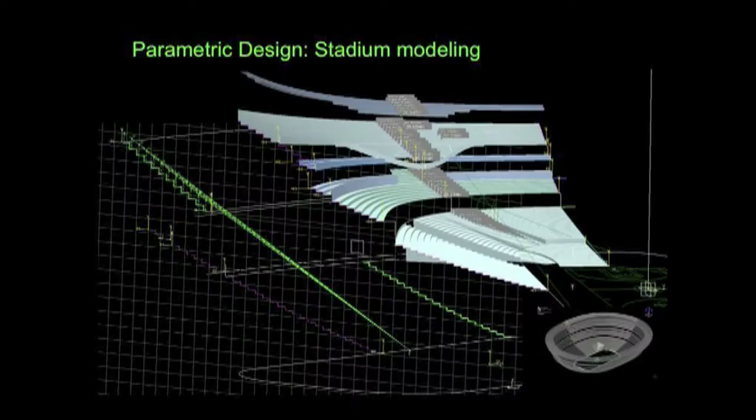Parametric stadium design is the lowest level of active computing. Instead of defining fixed geometry, you define variable geometry which you can play around with on a rule-based basis to construct alternative forms very rapidly. In this case, you can pull the stadium around — it's in the bottom right-hand corner of the slide, like a piece of electronic putty — and all the calculations about all the sightlines of the 40,000-odd seats follow automatically. All the tedious work is being done for you, continually checking as you rearrange the stadium in real time.